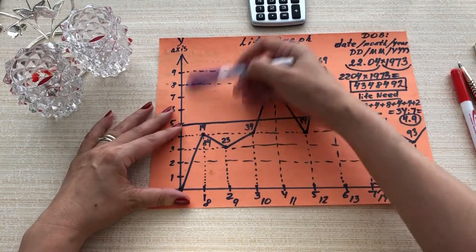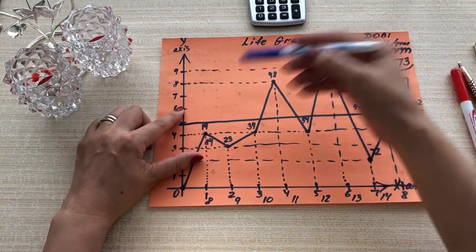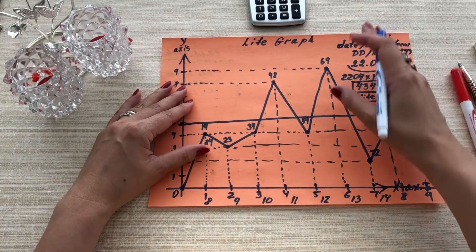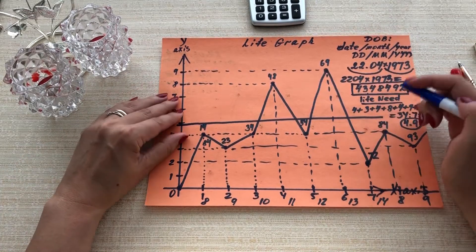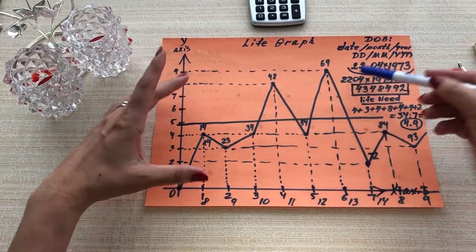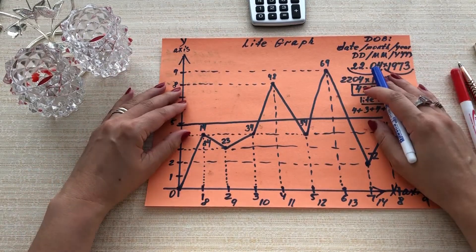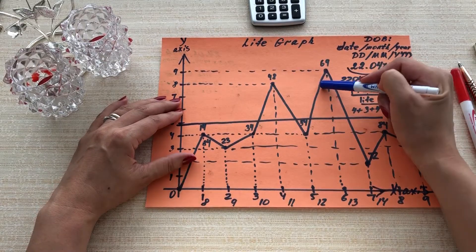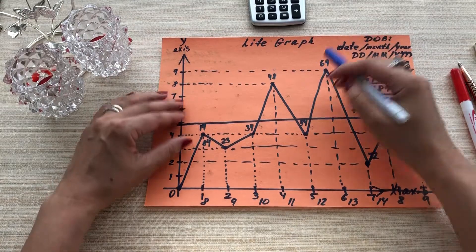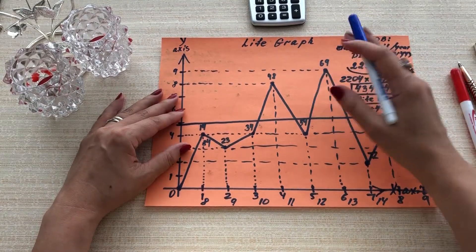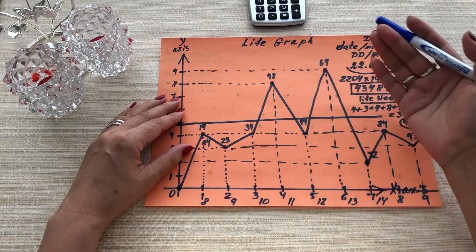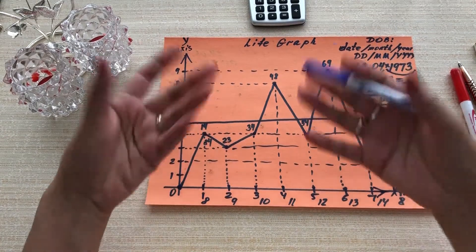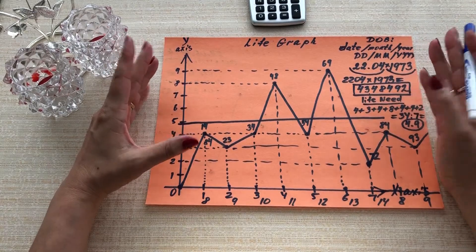But it doesn't mean that if your graph is somewhere lower, you will not reach your goals, or not be educated, or not be rich. No! Even at point 1 or 2 on the graph, it means you can be very rich — just your money will come through very hard work. For some people their graph is at the highest level — 7, 8, 9 — but it doesn't mean they're automatically lucky or rich. It means this person has good opportunities to get there.